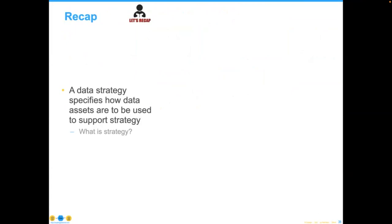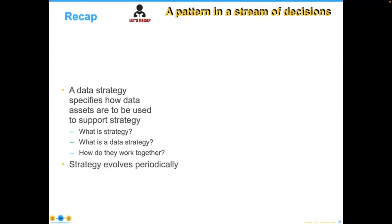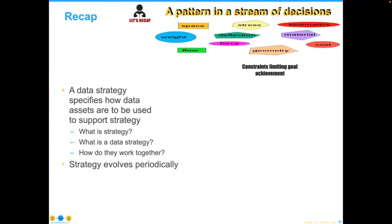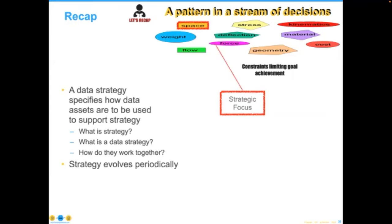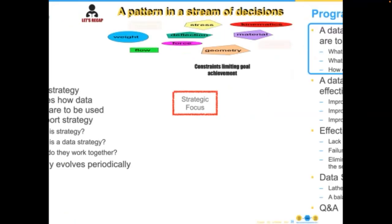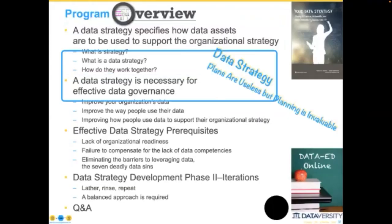We're at the end of the first section. Data strategy specifies how data assets are to be used to support strategy. We've covered what is a strategy, what's a data strategy, and how they work together, focused on that pattern in a stream of decisions. Think of it in a gamified way: my first strategic iteration might focus on space, and the second on costs — you'll see what this iteration cycle looks like as we get further into the process.